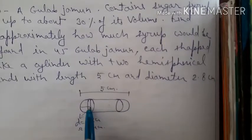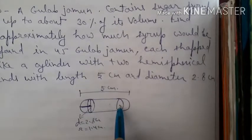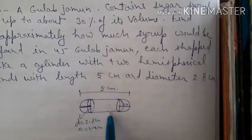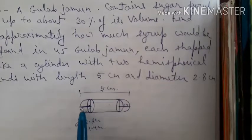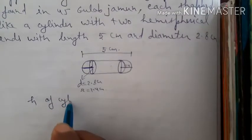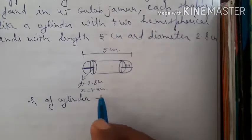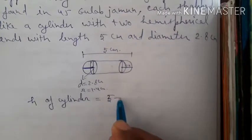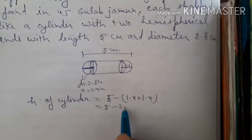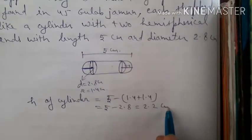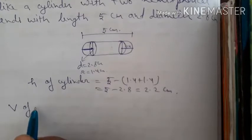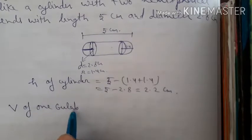The radius for the cylinder and for the hemispheres is also equal to 1.4 cm. Height of the cylindrical portion equals 5 − 1.4 − 1.4 = 5 − 2.8 = 2.2 cm. Now we find the volume of 1 gulab jamun, which is made of a cylinder and 2 hemispheres.